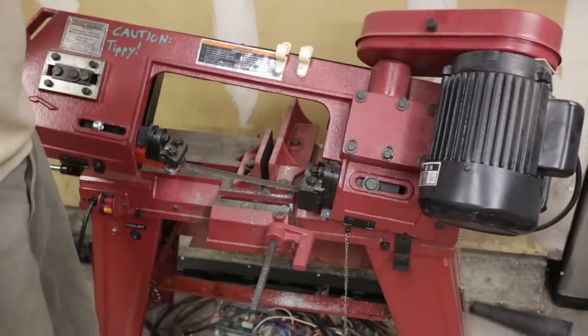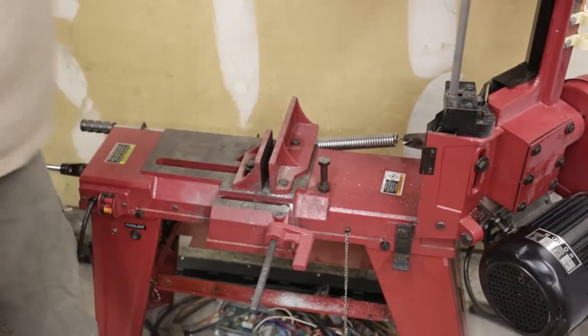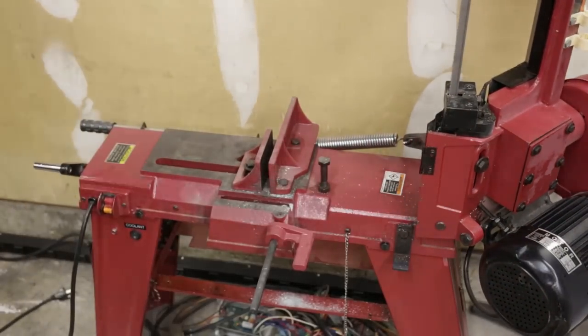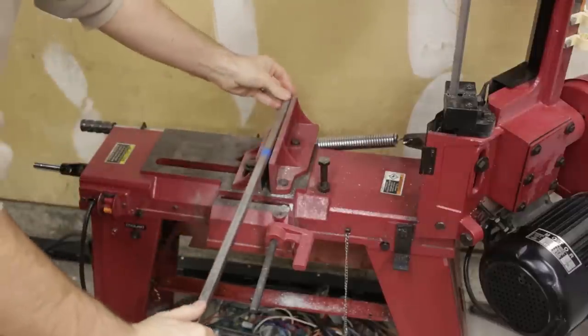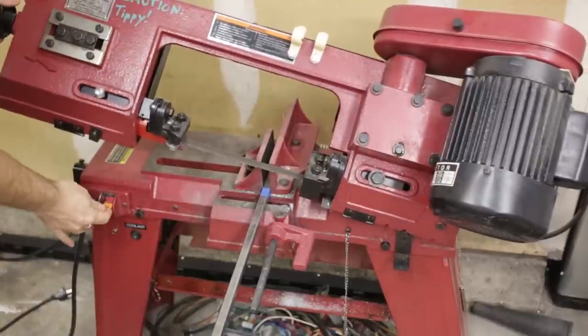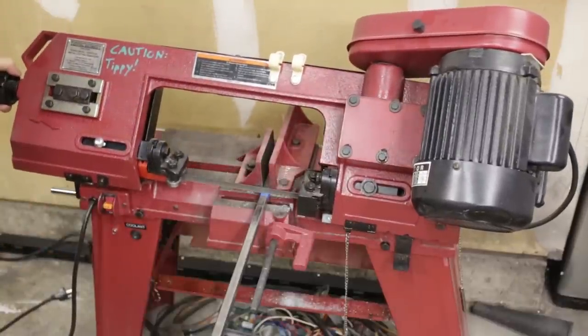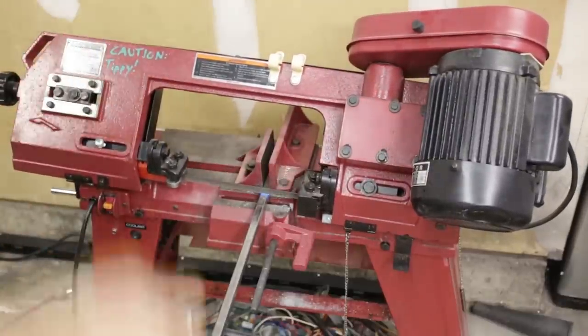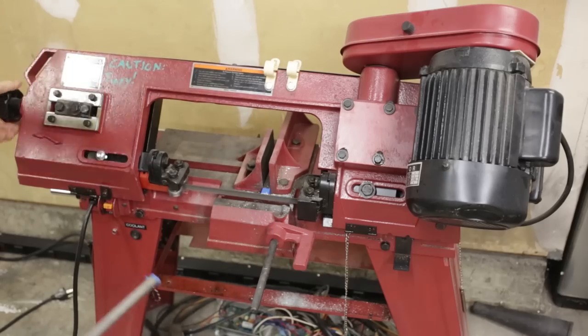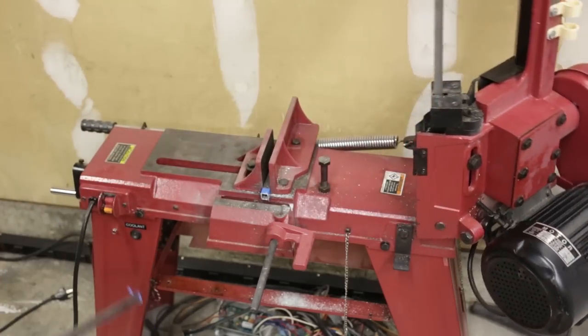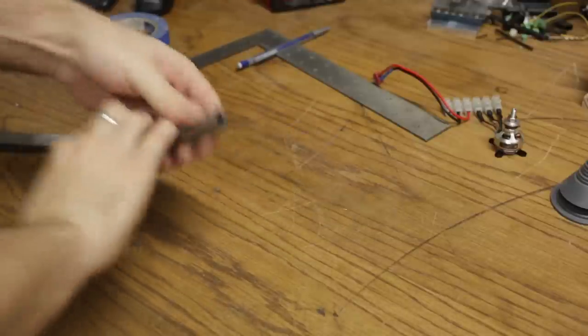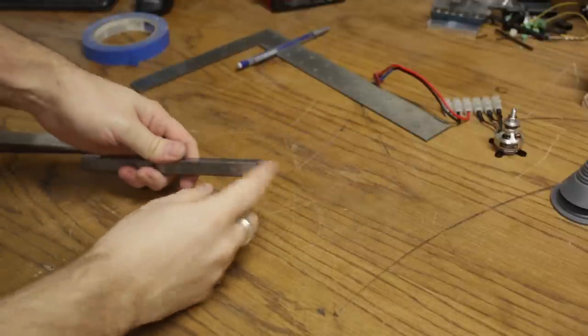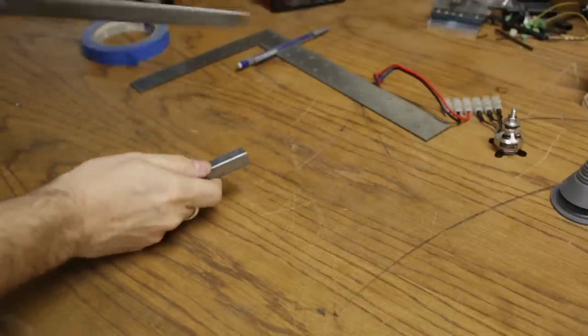I've got the trusty bandsaw set to a slower speed setting for steel. I'm going to clamp this in and try and get as close to possible. The bandsaw doesn't cut exactly square so there's a little bit of nastiness on here.